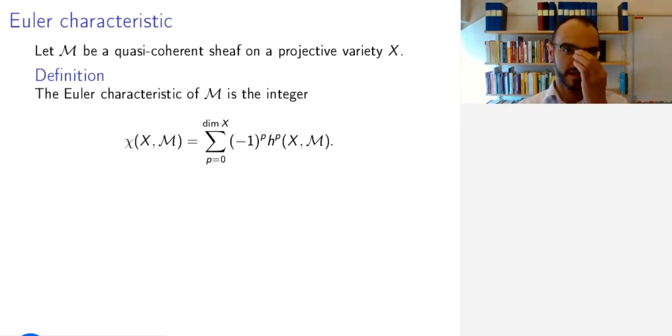The setup is the following. We take a quasi-coherent sheaf M on a projective variety X and define the Euler characteristic as the following integer χ(X,M), namely the sum from 0 to the dimension of X of the dimensions of the cohomologies of M with alternating signs.